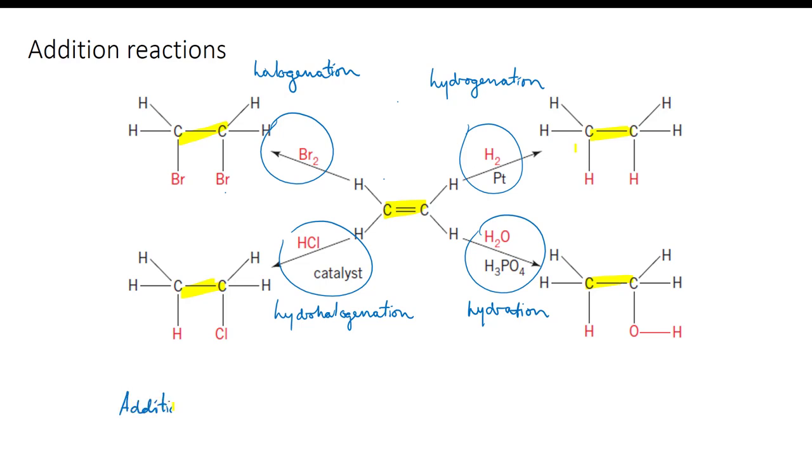In addition polymerization, we're using the same technique, but when the double bond is broken, the new bonds that have been freed up are used to join the monomers to one another. Let's look at some examples.